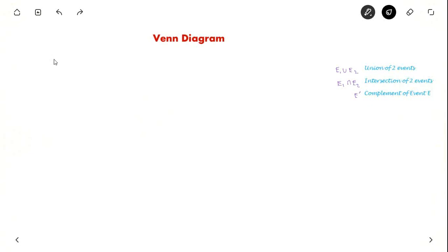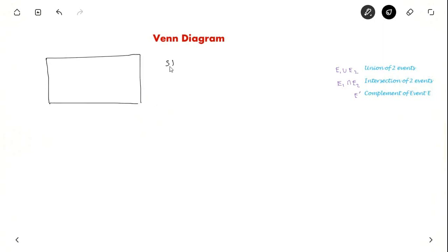Hello everyone, today we will be seeing about Venn diagrams. Let us say the sample space is picking up a deck of cards — this is the sample space which contains picking up a deck of cards.